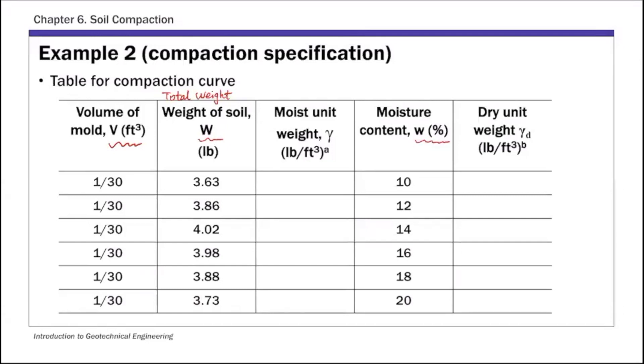So for moisture unit weight, this is something again similar to example one, so I'm going to just directly write the results here. Let's call this gamma m, so that's the moist value. And for dry unit weight, example one, gamma moist over one plus moisture content divided by 100. So if you substitute that, this will be the last column. So that's the compaction test results.